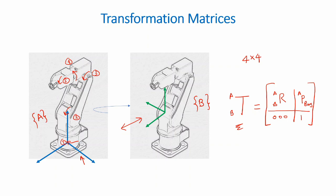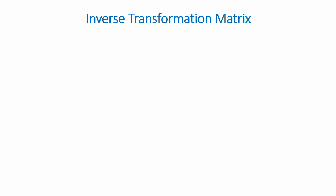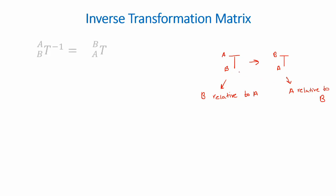Before going into an example, let's look at inverse transformation matrices. Using TAB gives you B relative to A. However, depending on the calculation or the problem you are trying to solve, you may sometimes need to find the transformation matrix of A relative to B. To do this, you can simply find the inverse of TAB and you would get TBA.